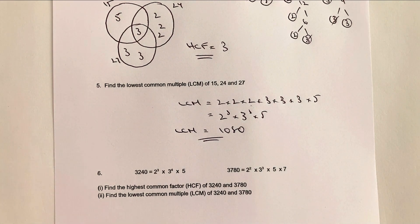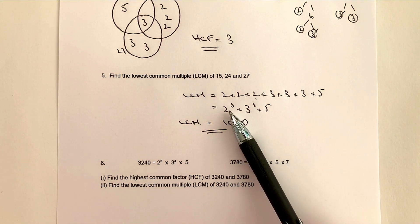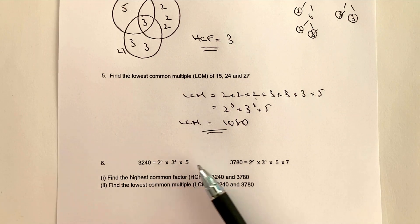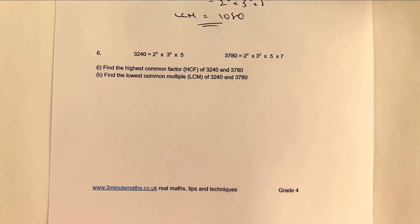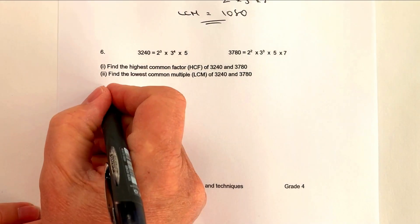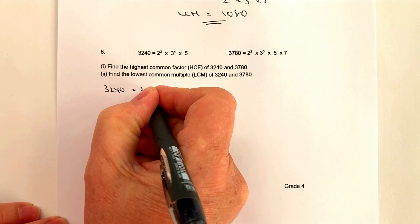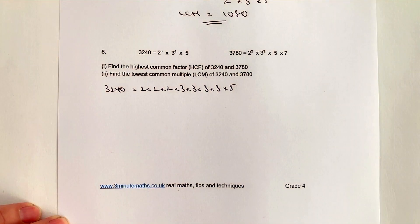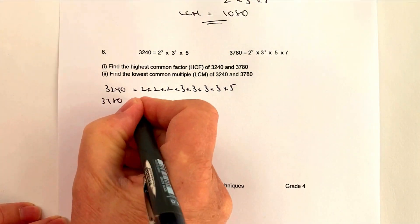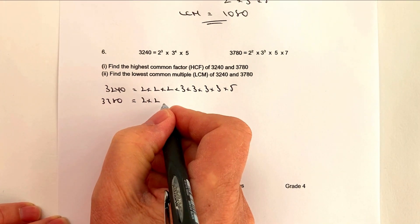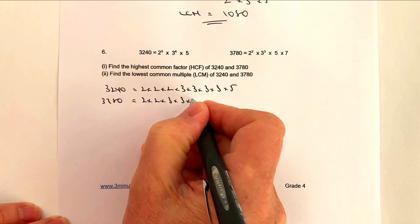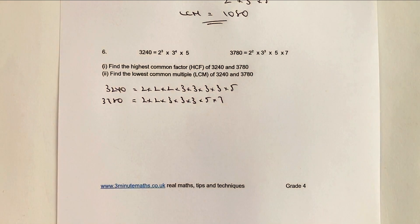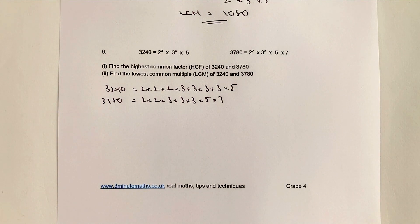The next question gives us the prime factorizations directly. 3240 = 2³ × 3⁴ × 5 (i.e., 2 × 2 × 2 × 3 × 3 × 3 × 3 × 5). And 3780 = 2² × 3³ × 5 × 7 (i.e., 2 × 2 × 3 × 3 × 3 × 5 × 7). I've written them one above the other deliberately, as it makes it easier to identify the common factors for the Venn diagram.